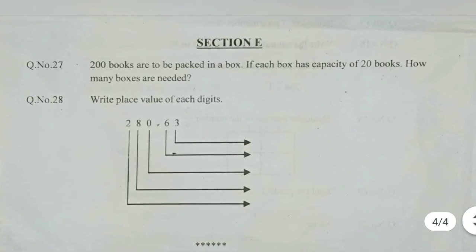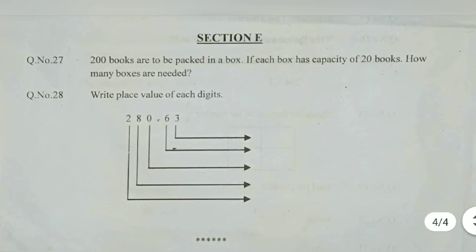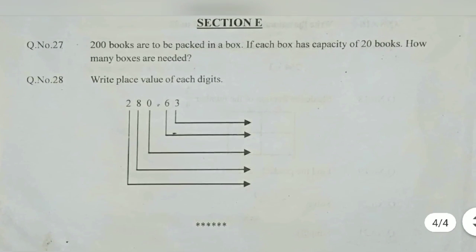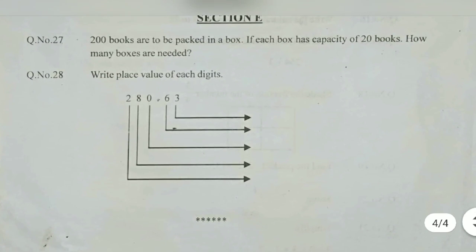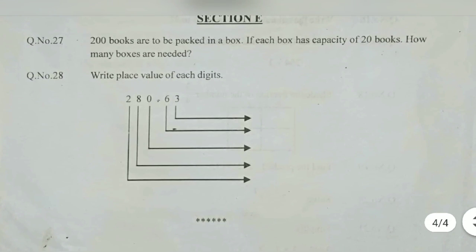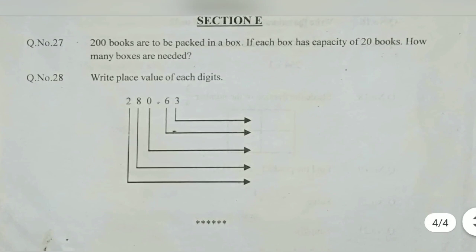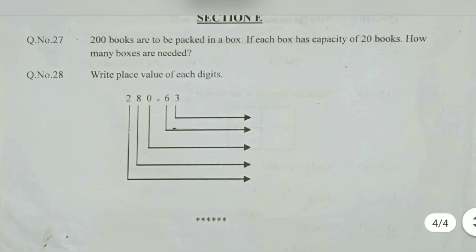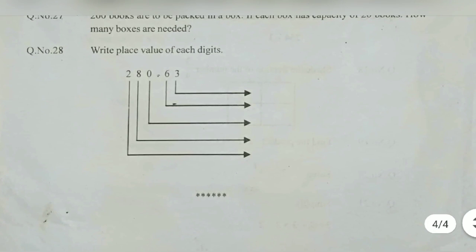200 books are to be packed in a box. If each box has capacity of 20 books, how many boxes are needed? 200 books is there, 20 books are there in a packet, so 200 divided by 20, that is equal to 10 boxes we need. Write the place value of each digit. 280 is 0.63 - 0 is the ones digit, 8 is the tens, and 2 is the hundreds. And 0.63 - 6 is the tenths digit and 3 is the hundredths digit.